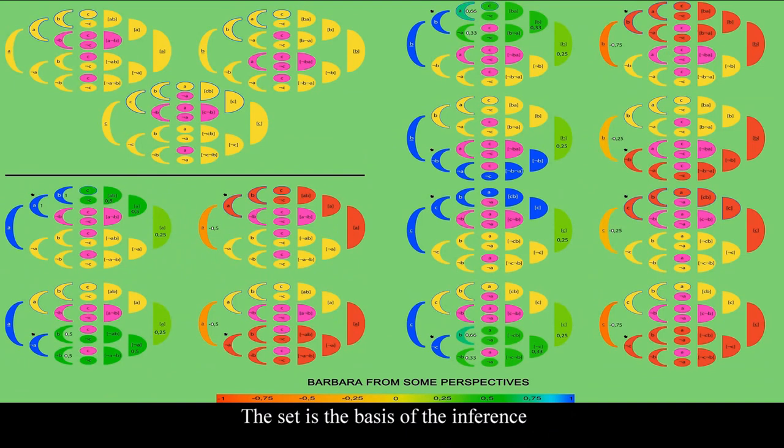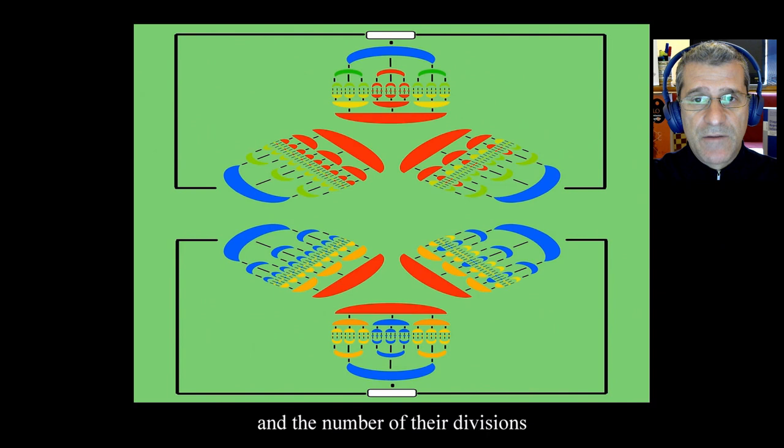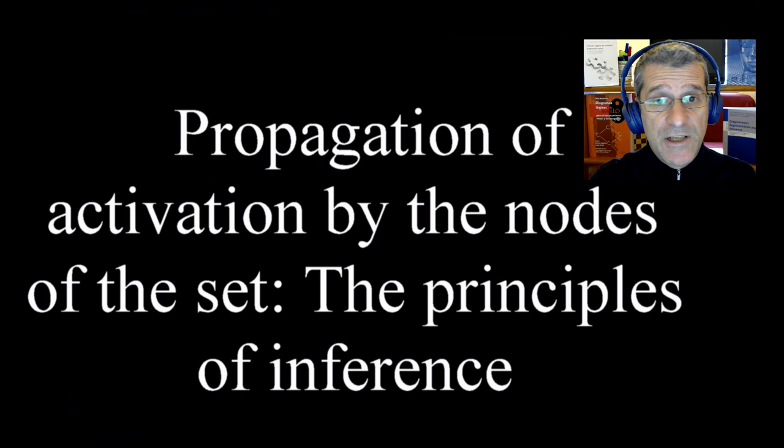The set is the basis of the inference, regardless of the number of criteria or the number of the divisions. We call the set of all sets alpha, propagation of activation by the nodes of the set, the principles of inference.